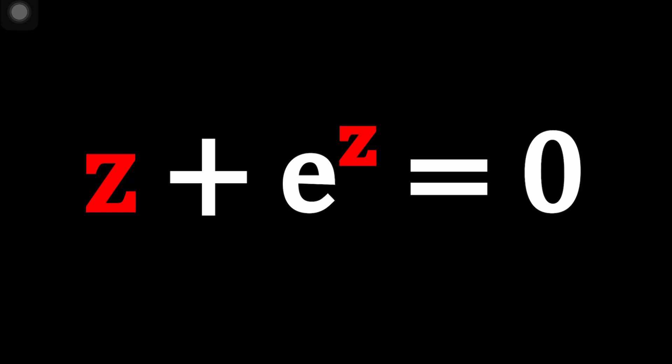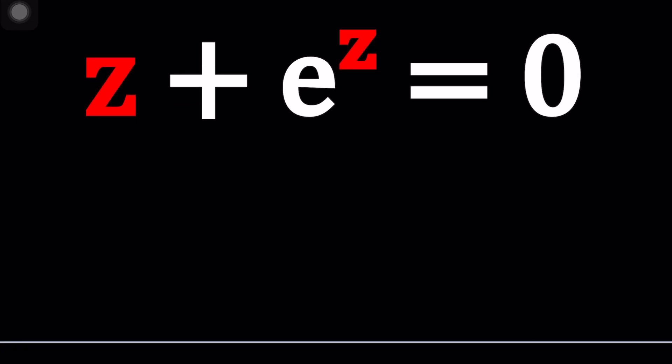I want to go ahead and actually use a special function for this problem. What is that special function? That special function is called Lambert's W function. Lambert's W function is denoted with a capital W, which is what we usually call W instead of F or any other function.